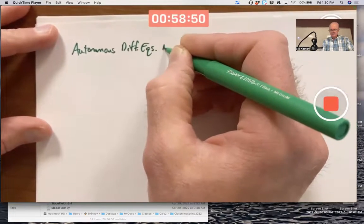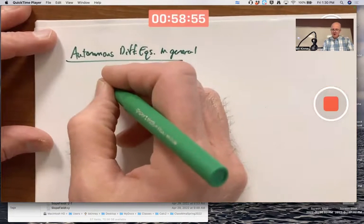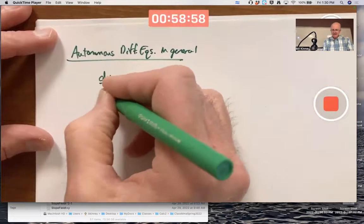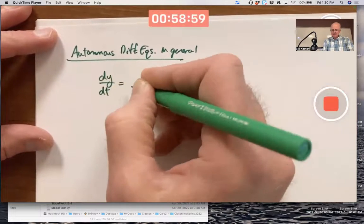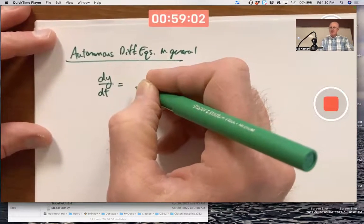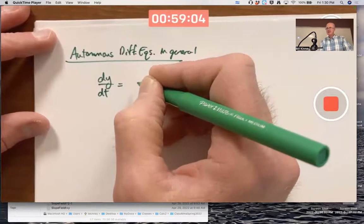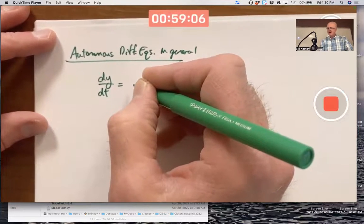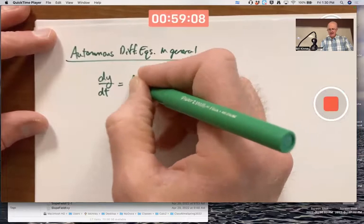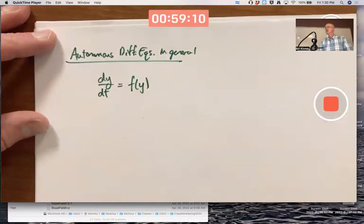In general, let's go back to using y and t. dy/dt equals... what does autonomous mean? It means the right-hand side only depends on the dependent variable, in this case y, say f(y). No t's on the right-hand side.